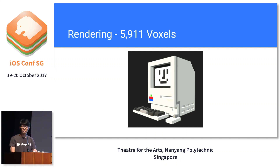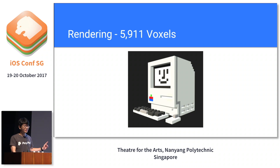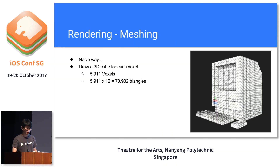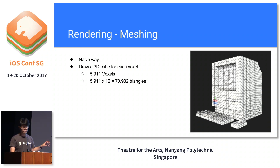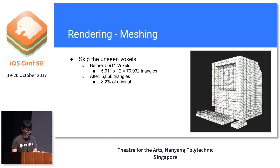Now let's look at something more complicated. Say we have this model with around 6,000 voxels — it's a Macintosh. The naive approach is to draw a 3D cube for each voxel, but this is very inefficient: to draw this model we'd need 70,000 triangles. One easy optimization is to skip unseen voxels — many voxels inside the model are never visible to the user, so why render them? If we do that, we only need to draw 5,800 triangles, which is much less.